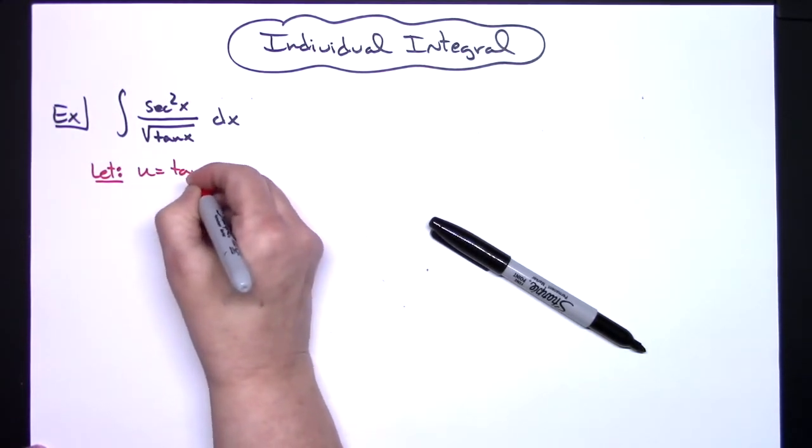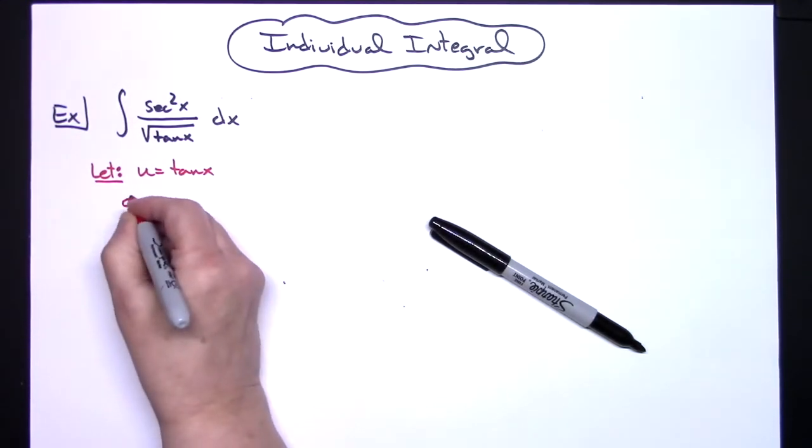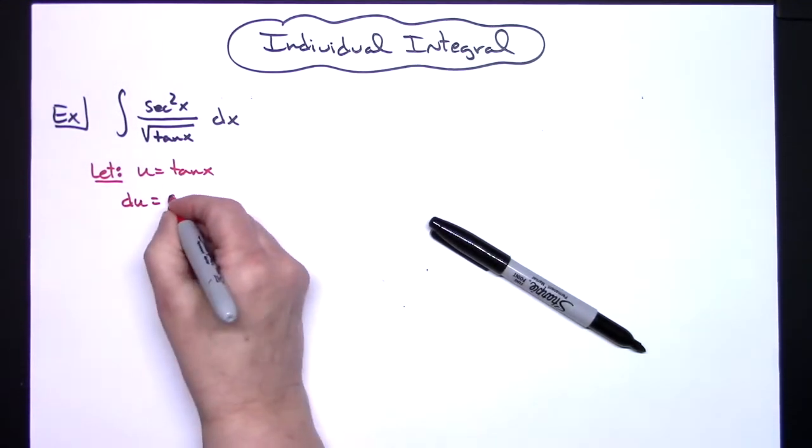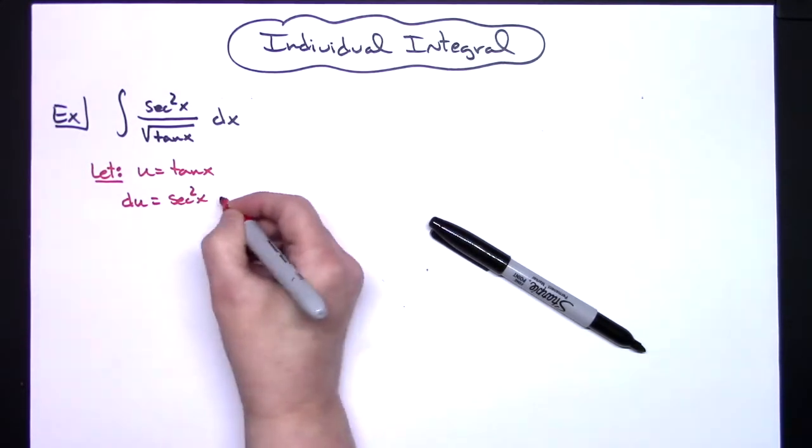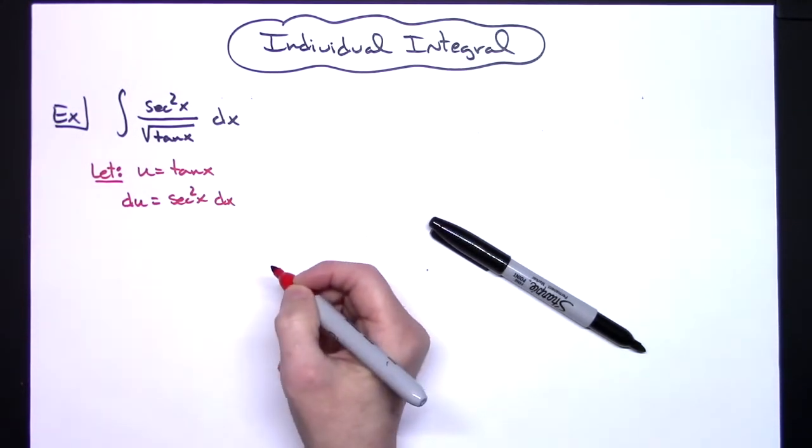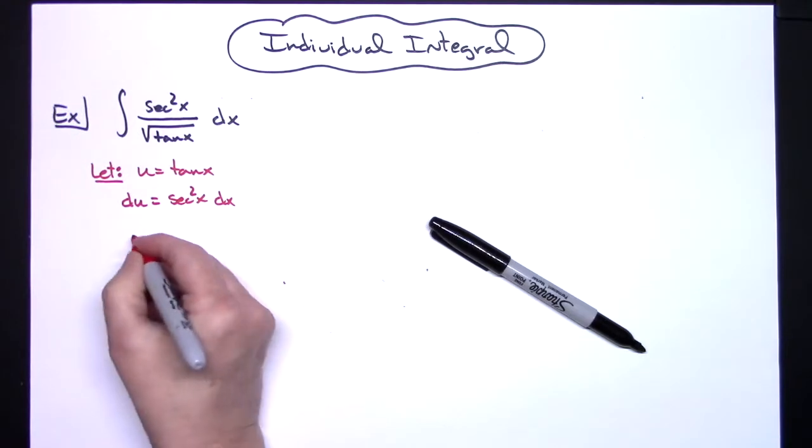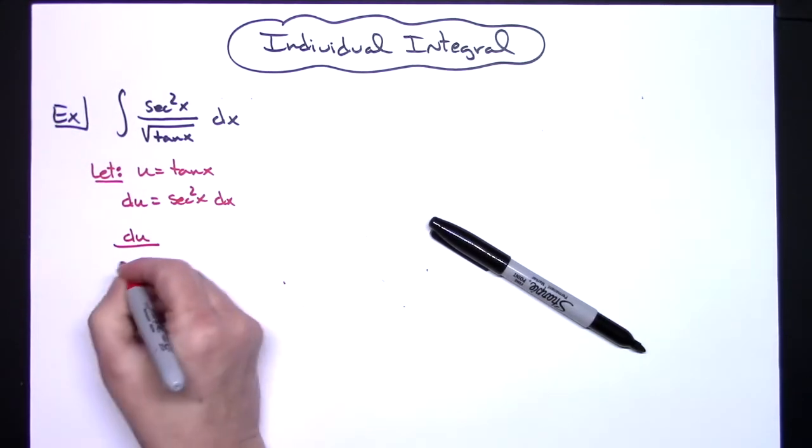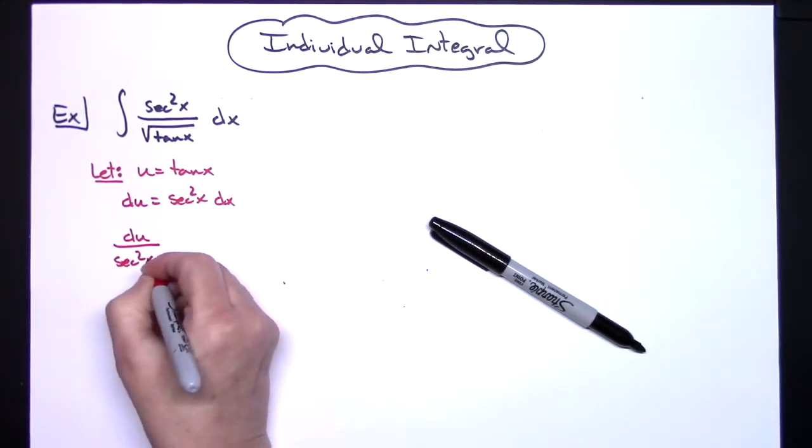After we do that, we're going to take the derivative of both sides. So we'll have du equals secant squared x dx. Solving all the way down for dx, we'll have du over secant squared x equals dx.